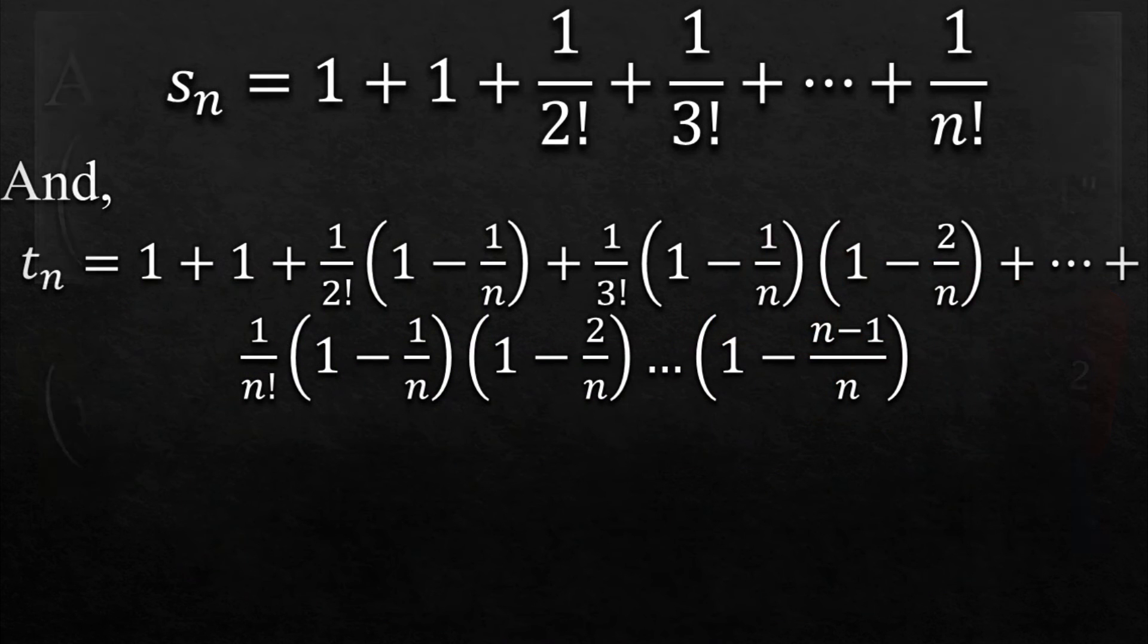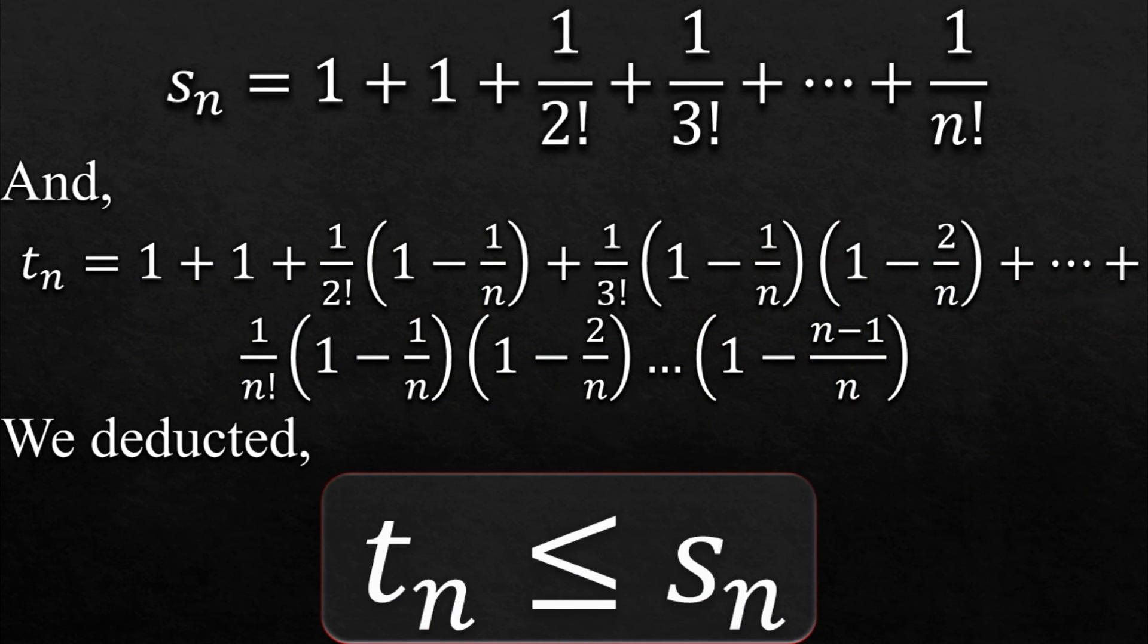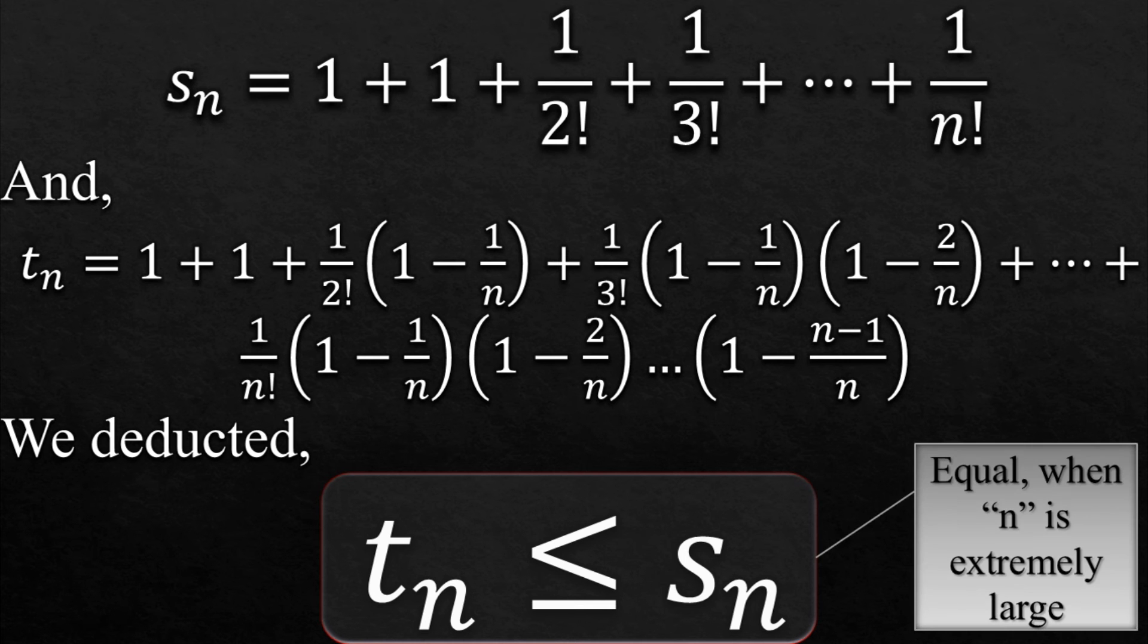So definitely these terms (1 - 1/n), (1 - 2/n) and so on decrease the value of Tn, and we deducted that Tn is less than or equal to Sn. And Tn gets equal to Sn when we take an extremely large value of n that makes 1/n almost equal to 0.